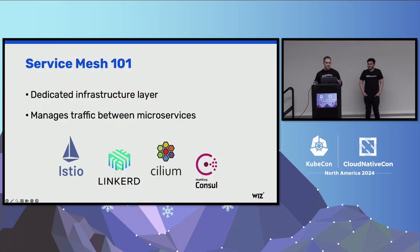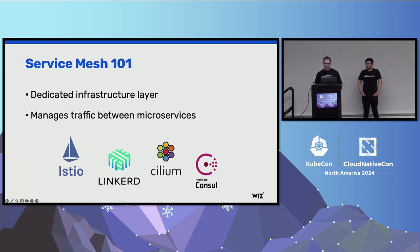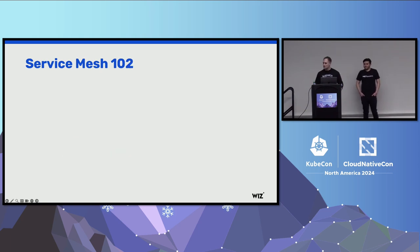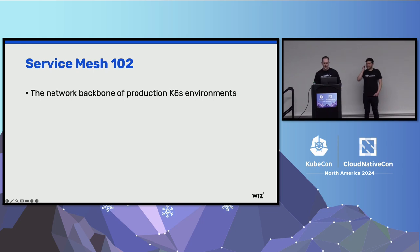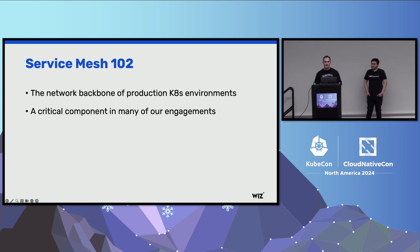A service mesh is essentially a dedicated infrastructure layer that manages the traffic between the different microservices within your cluster. Some examples include Istio, Linkerd, Cilium, and Consul — there are many more service mesh solutions on the market, but these are just honorable mentions. These solutions are the network backbone of many production Kubernetes environments, and quite frankly, a critical component in many of our engagements.